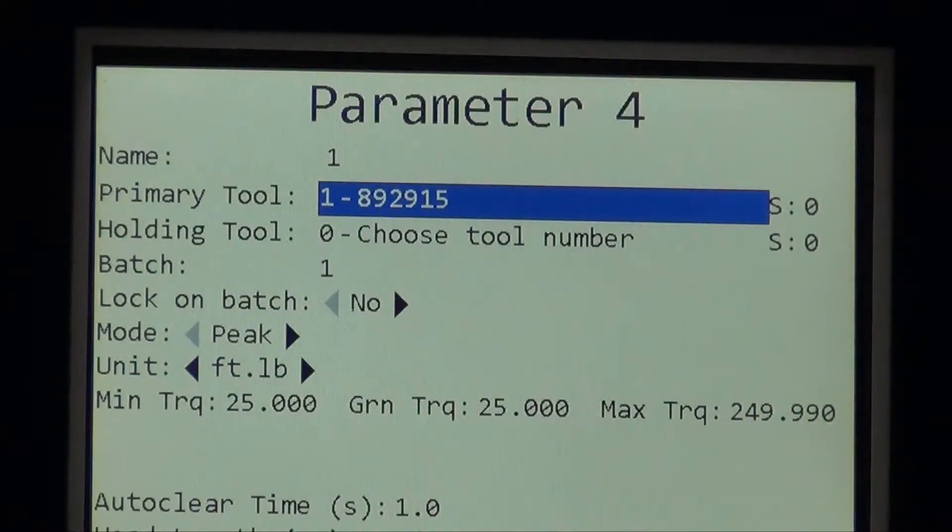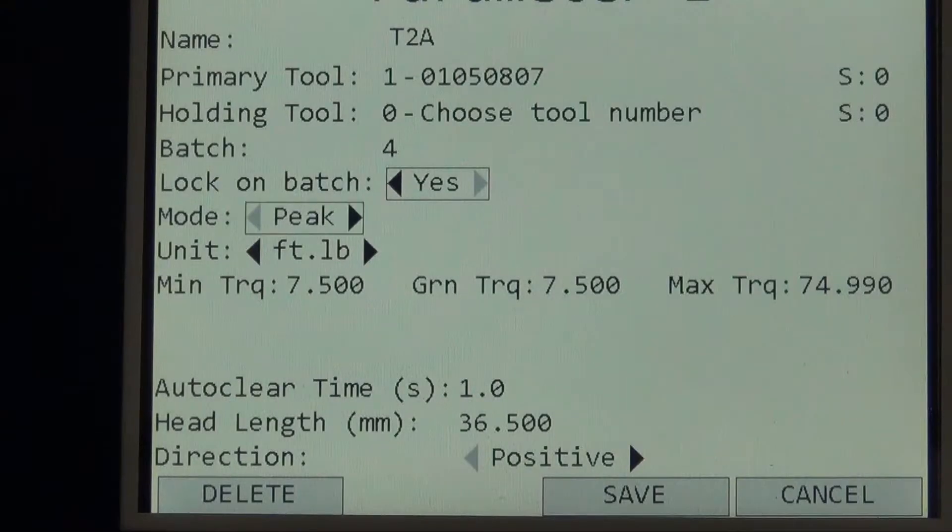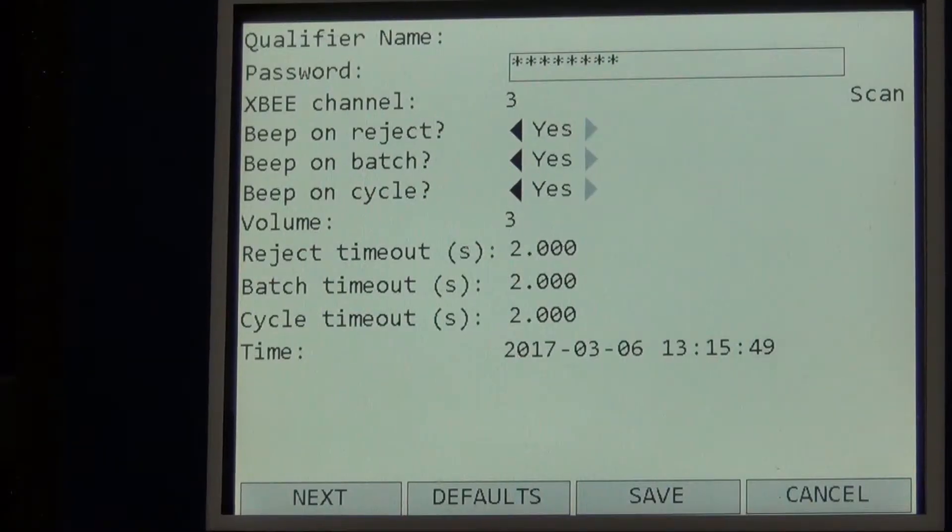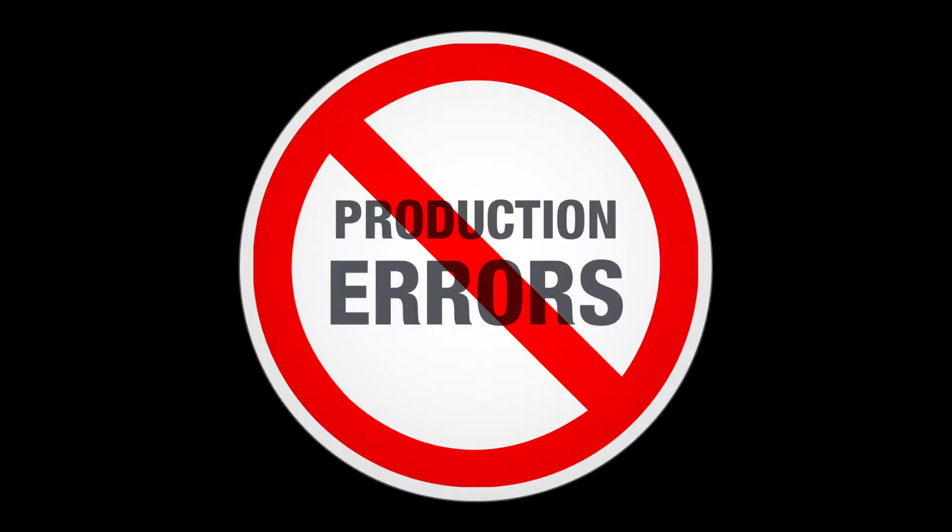Yet, making changes to parameters, tools, batch count, radio channels and other elements are all made within the Global 400. We don't allow changes to be made at the tool level because inadvertent changes could create new variables which cause errors, not prevent them.